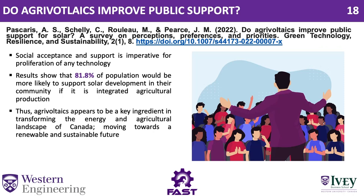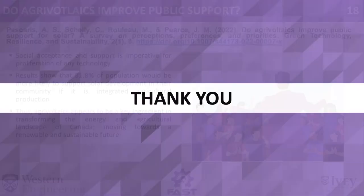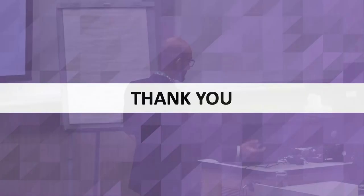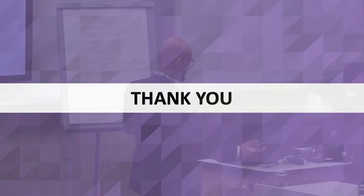On my last slide — 'Do Agrivoltaics improve public support?' — a study done in the US shows that almost 82% of people are more inclined towards solar PV and PV-based electricity generation when told that their farmland can have dual use through PV, generating electricity while still continuing farming. Thank you so much for listening. Happy to answer any questions.